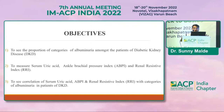The objectives were to determine the proportion of categories of albuminuria among patients with diabetic kidney disease, to measure serum uric acid, ankle brachial pressure index, and renal resistivity index, and to correlate these with the various categories of albuminuria in patients with diabetic kidney disease.